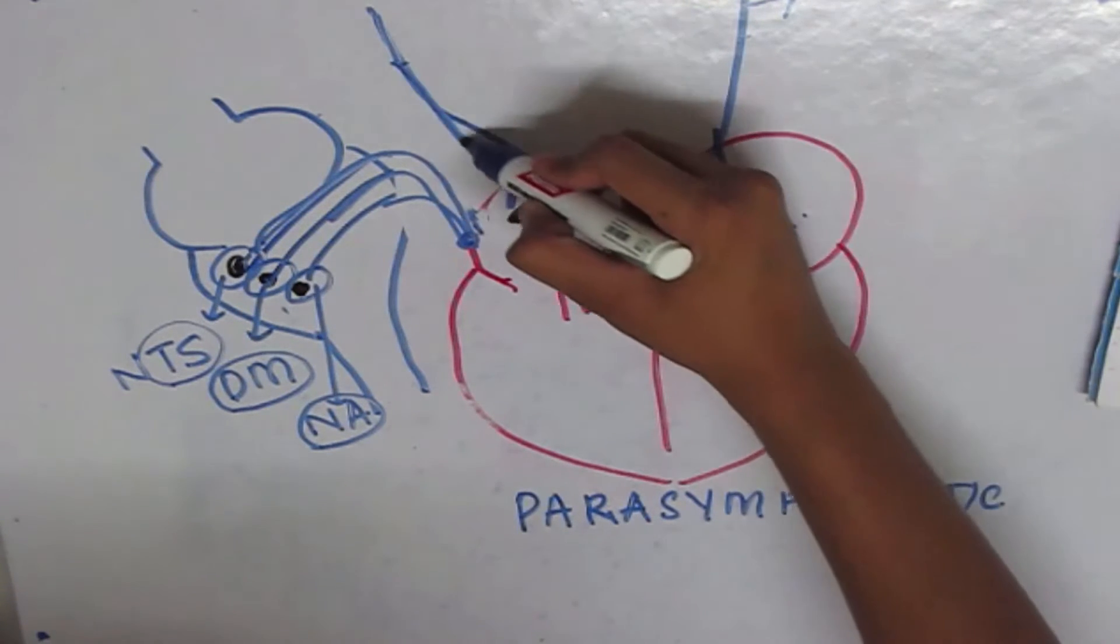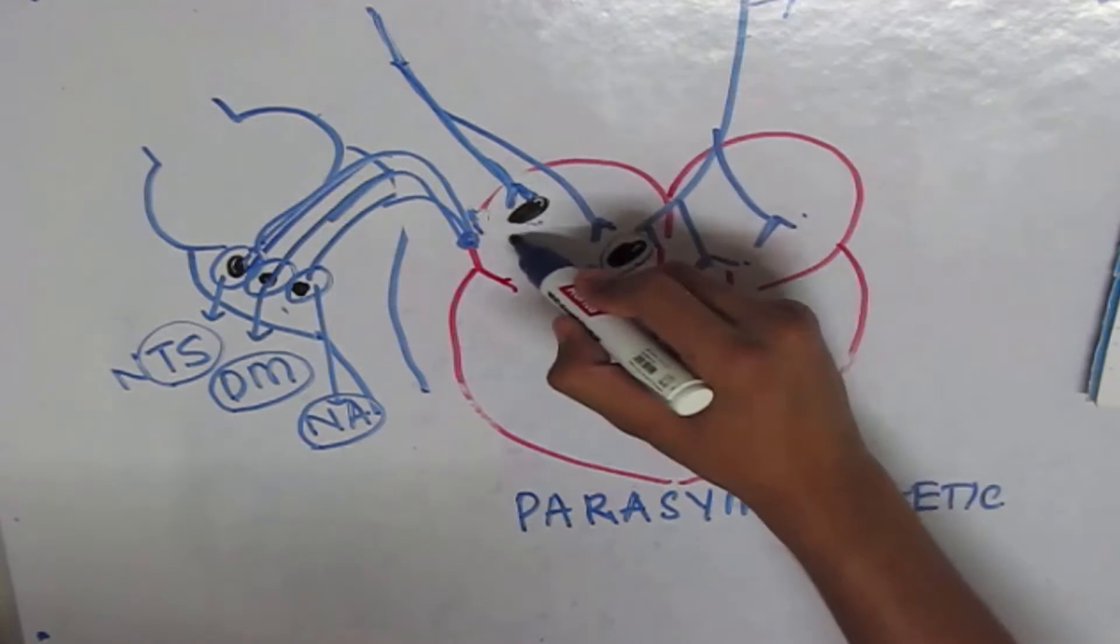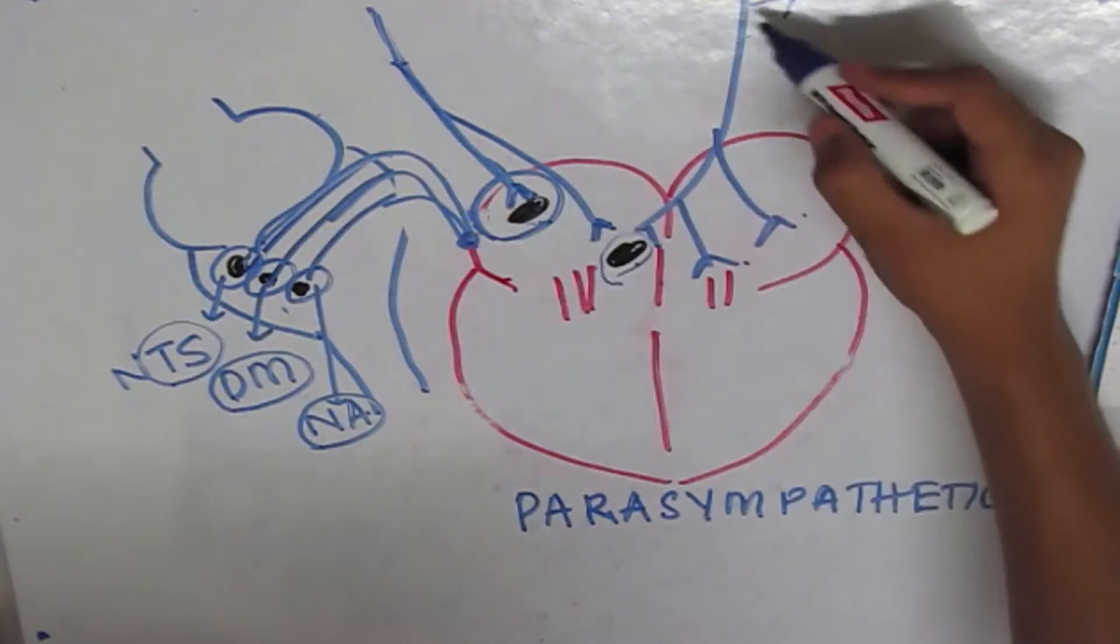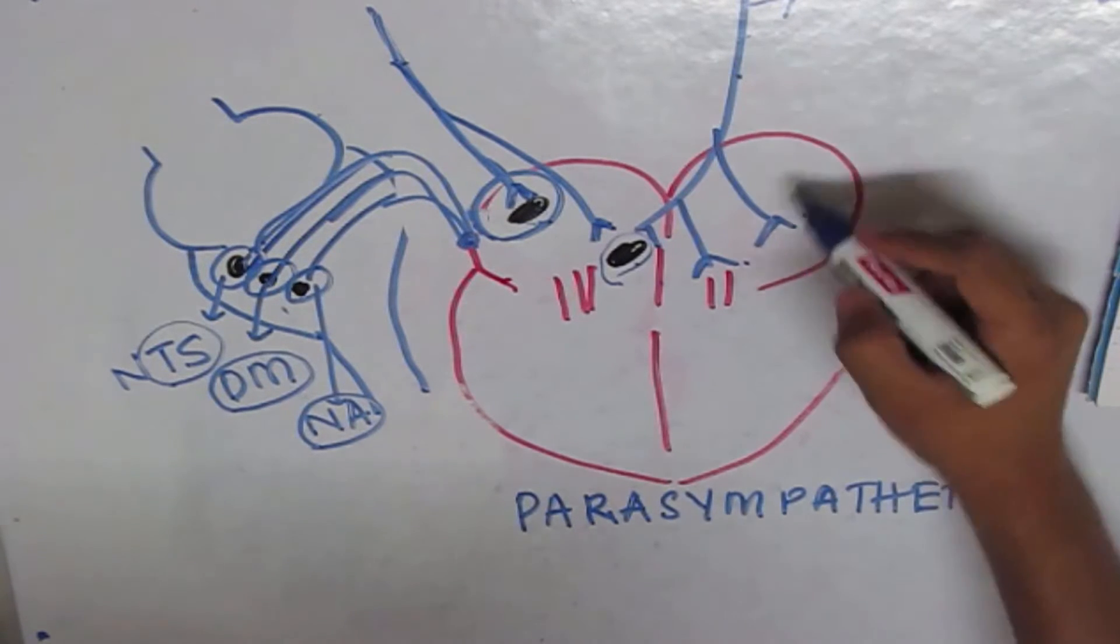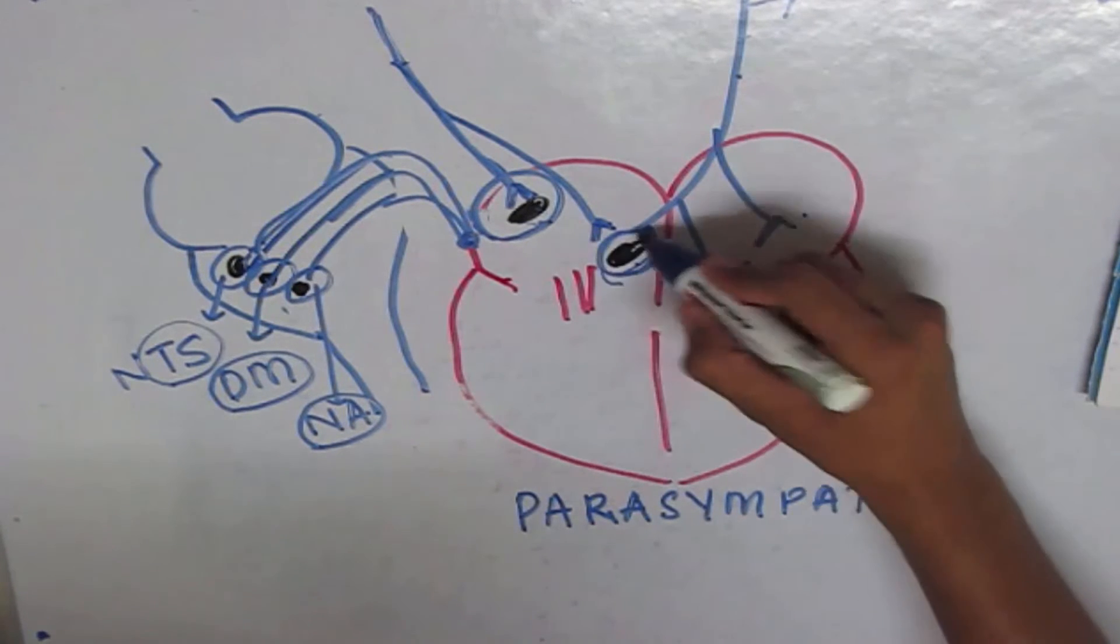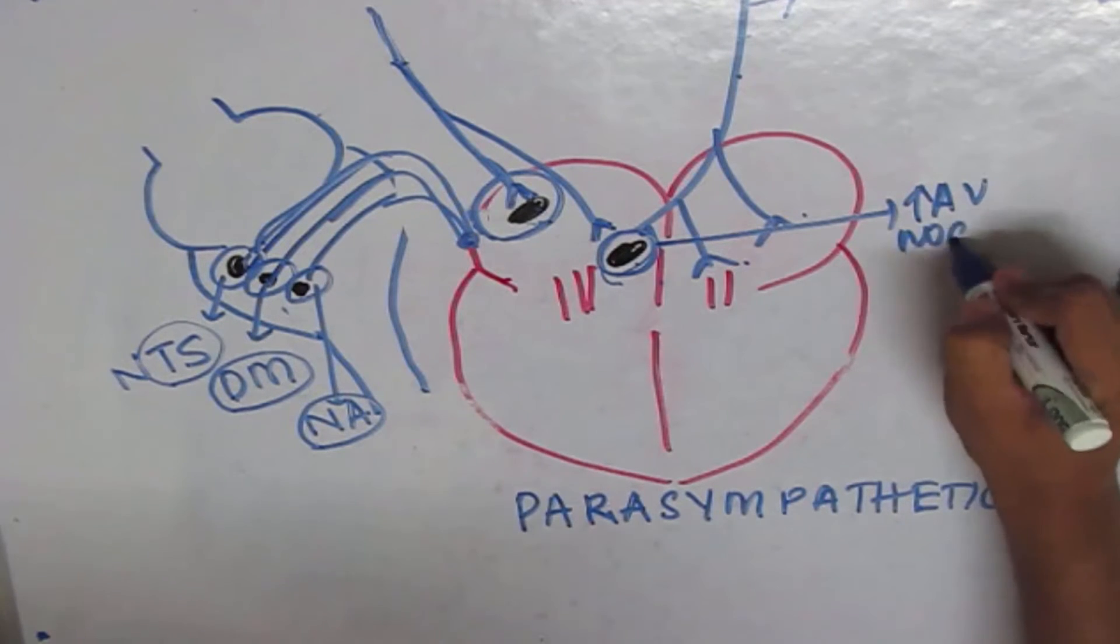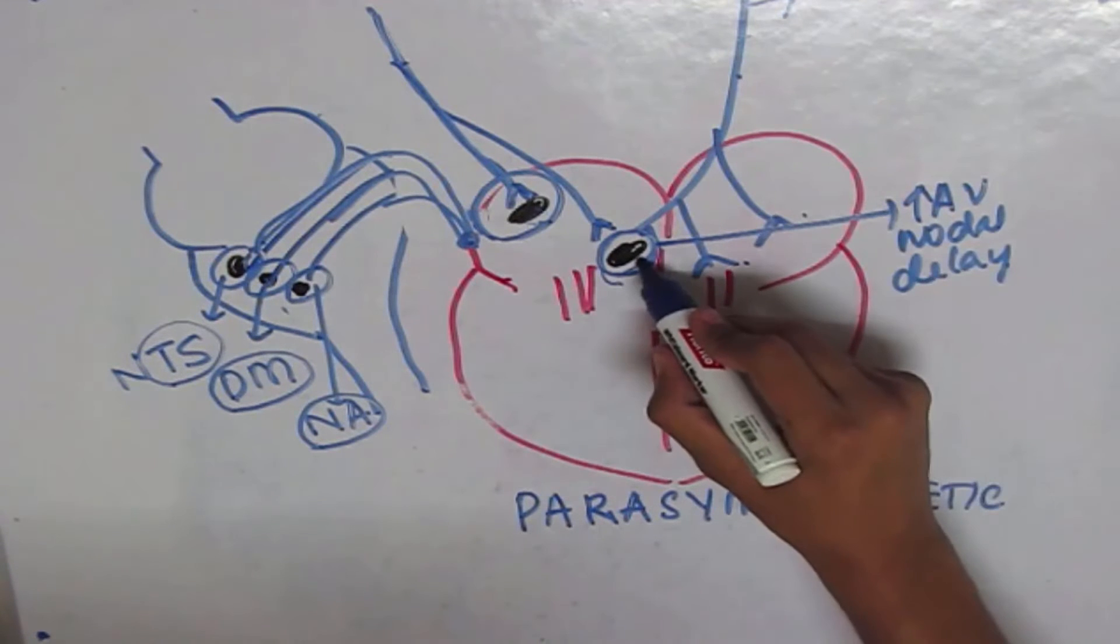The right vagus actually inhibits the heart rate because it inhibits the SA node. The left vagus inhibits the AV node or it increases the AV nodal delay. So it increases AV nodal conduction.